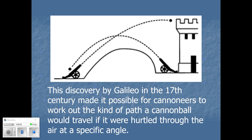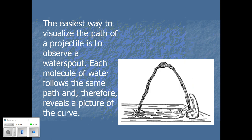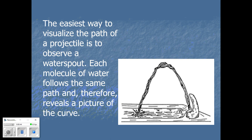Galileo used parabolic trajectories to shoot cannonballs. We also see marine mammals jumping out of the water in parabolic arcs, and water coming out of a water fountain follows the same curve. When you're drinking from a water fountain, that probably isn't one of your thoughts — but it does tie back into hydrating yourself so you don't get kidney stones.